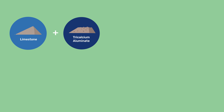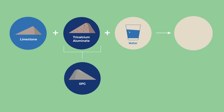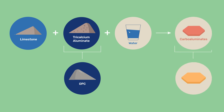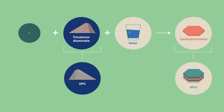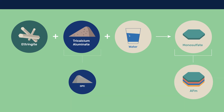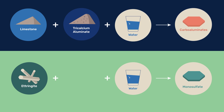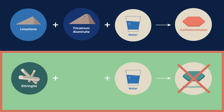However, in the video on OPC hydration, we saw that limestone can react with tricalcium aluminate, or C3A, present in OPC to form carboaluminates, which are part of the family of layered calcium aluminate phases noted AFM. In absence of limestone, the phase assemblage would evolve to include a sulfate AFM phase referred to as monosulphate. When limestone is present, it leads to the preferential formation of carboaluminates rather than monosulphate.